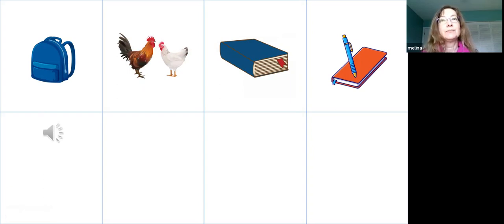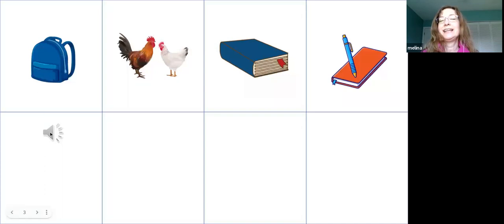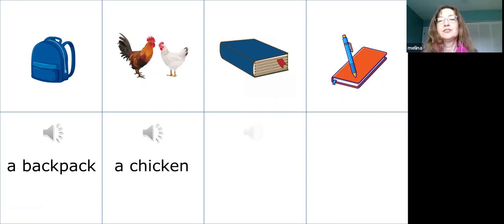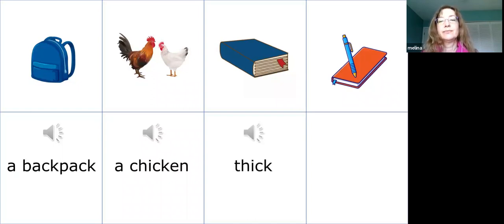When you're in PowerPoint, clicking the audio icon will speak the word — the narrator will say 'a backpack.' You can use this for spelling tests: have students see the picture and write the word. If they're not sure, click again and it will say the word. Click a third time and it shows the word written out. So you have control over whether students just see the picture, hear the sound, or see the picture, sound, and word together.